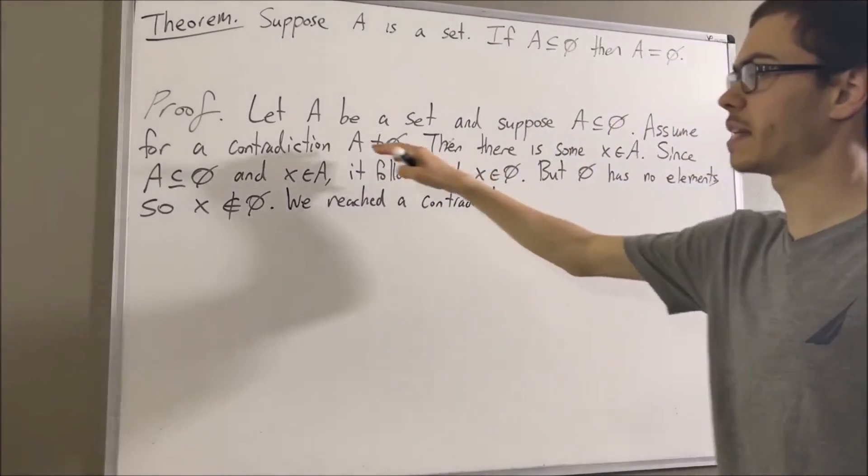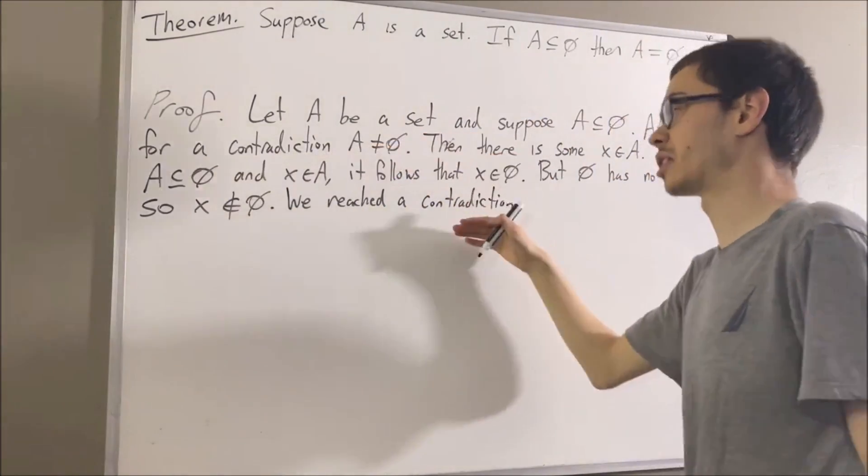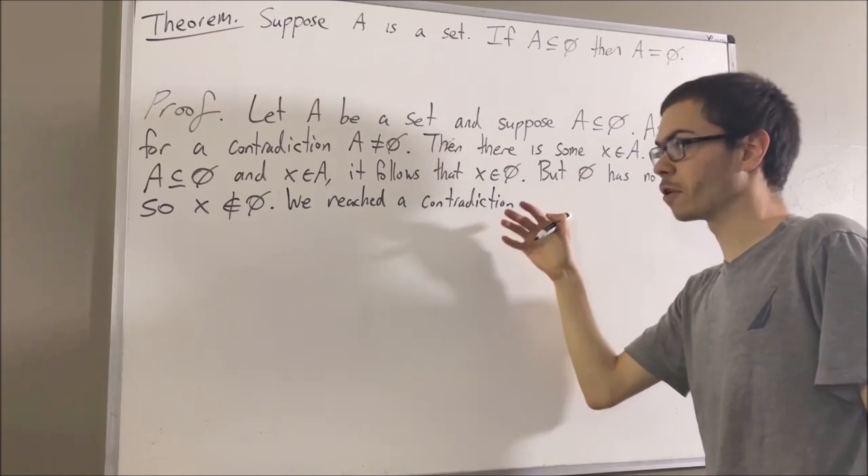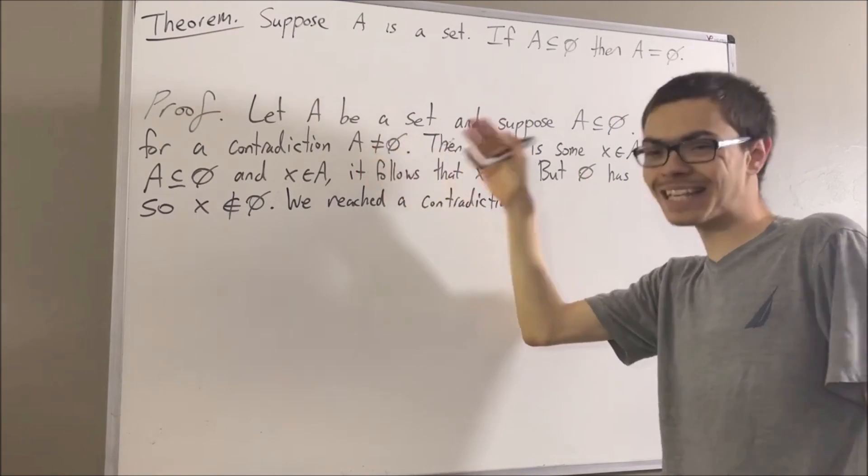And our assumption that A is not the empty set led us to this contradiction. Therefore, we must instead have that A is the empty set.